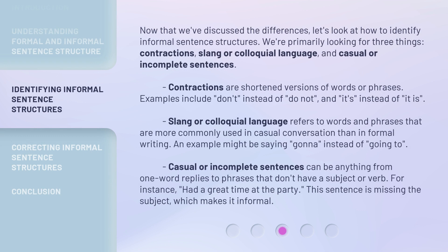Now that we've discussed the differences, let's look at how to identify informal sentence structures. We're primarily looking for three things: contractions, slang or colloquial language, and casual or incomplete sentences.